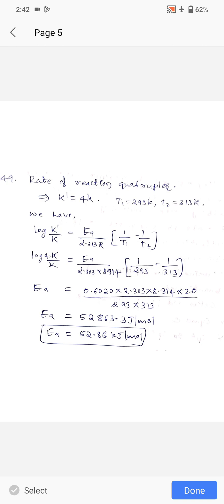Question 49: rate of reaction quadruples, same question I already solved in my previous video. Quadruples means k dash equals 4k, meaning second constant equals 4 times first constant. T1 and T2 are given. Log k dash divided by k equals Ea divided by 2.303 R times 1 by T1 minus 1 by T2. Log 4k divided by k, Ea divided by 2.303 into 8.314. Put all values and simplify, you get Ea equals 52,863.3 joule per mole. Convert to kilojoule, divide by 1000: 52.86 kilojoule per mole.